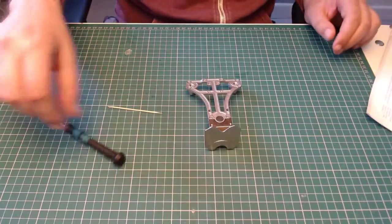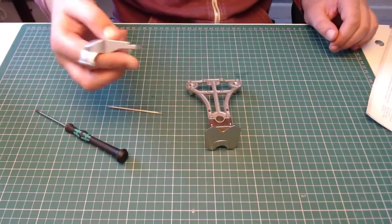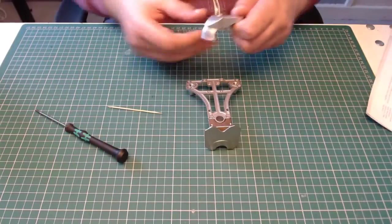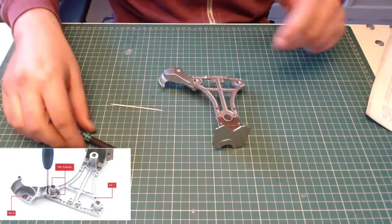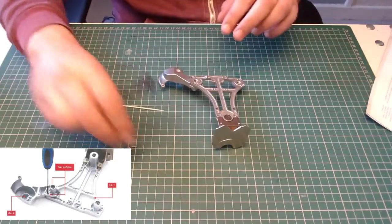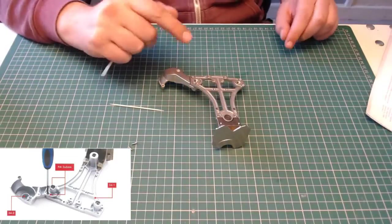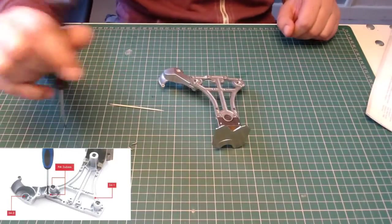So the next part we need to bring across is this part here. We need to slot this down onto there like so, and then again holding them washers and nuts in place we need to screw it in.